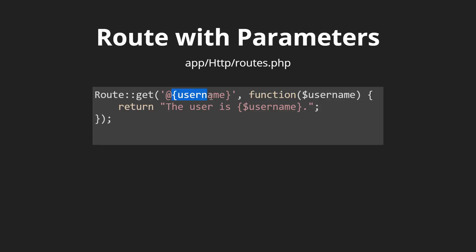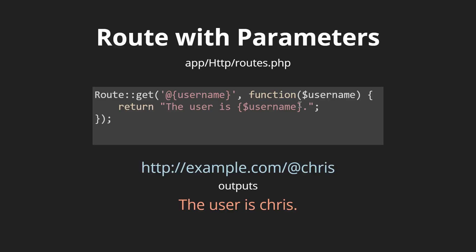We have the username variable and we can easily pass that into our function that handles this route by passing it straight through to the function. Then we get access to it using dollar sign username, just like we would use any other variable in PHP. As an example, we have an at-Chris username route, and this would output 'this user is Chris'.